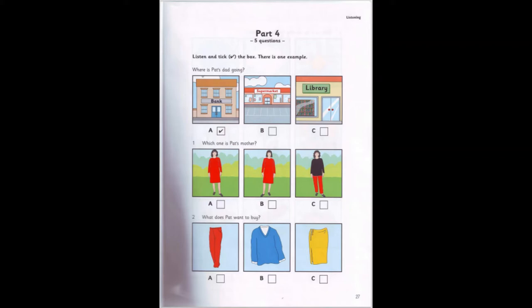1. Which one is Pat's mother? Is your mother here, Pat? Yes, she's in the garden with my aunts. Has your mother got straight hair? No, her hair is curly. Is she the one in the red dress? No, she's wearing trousers today.